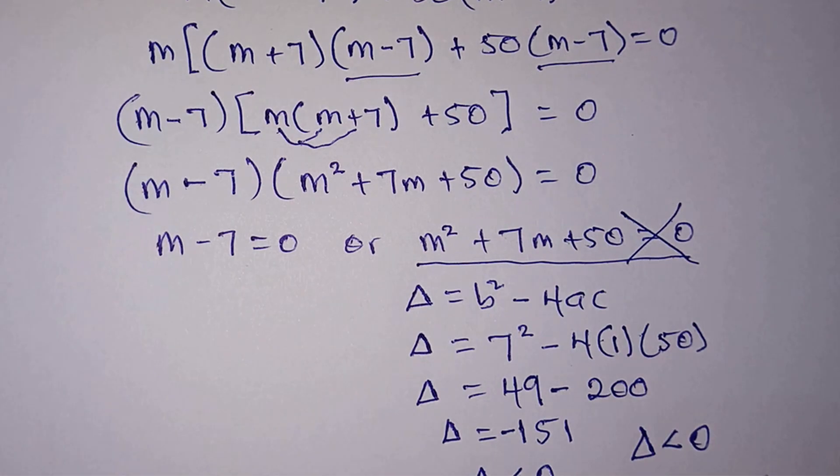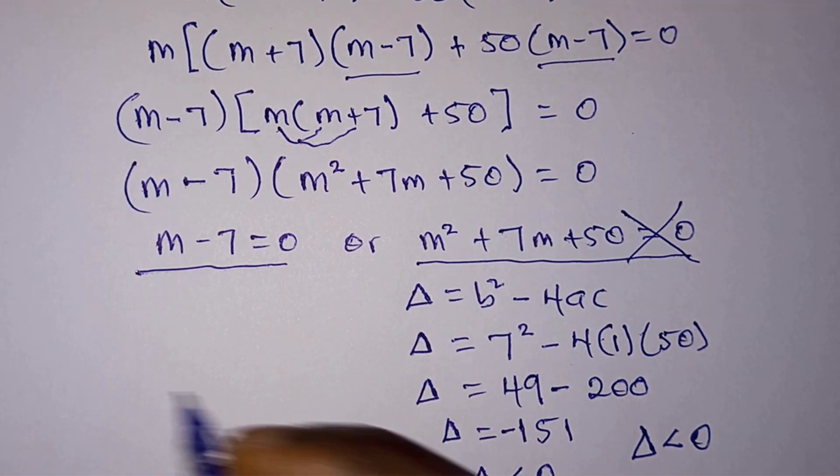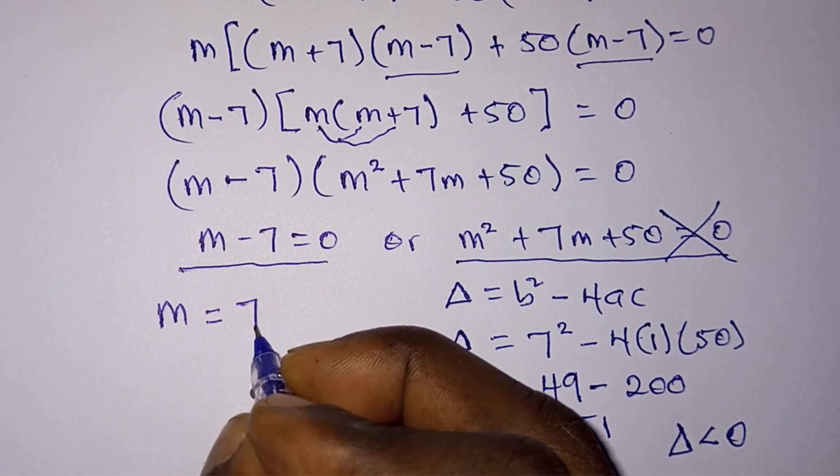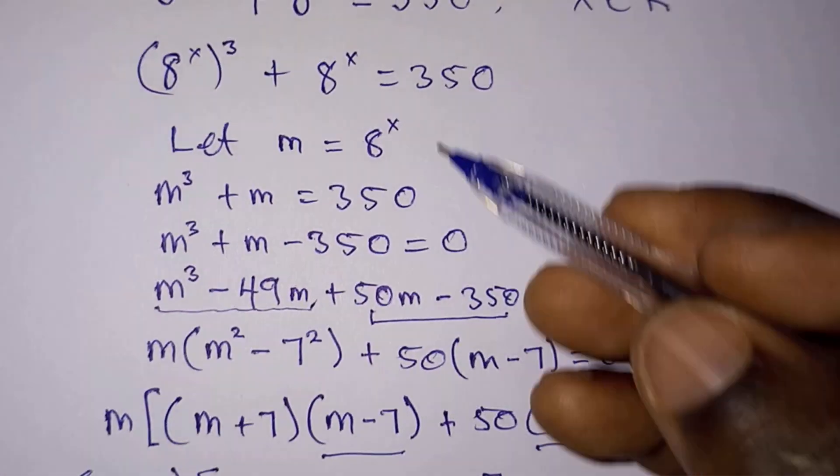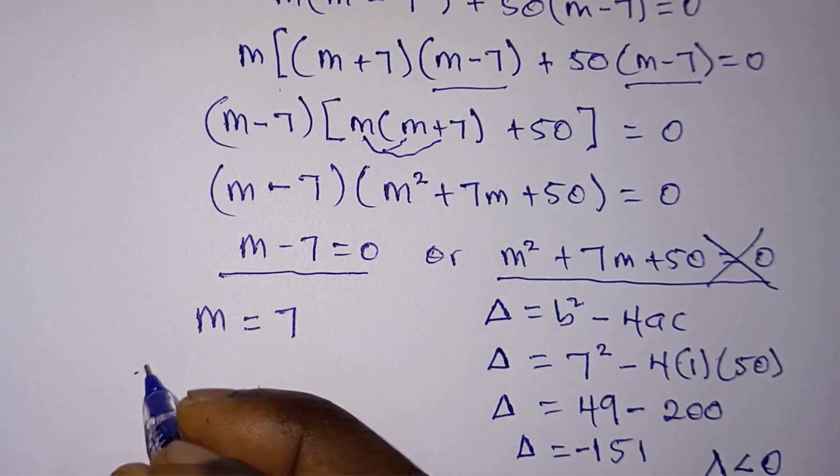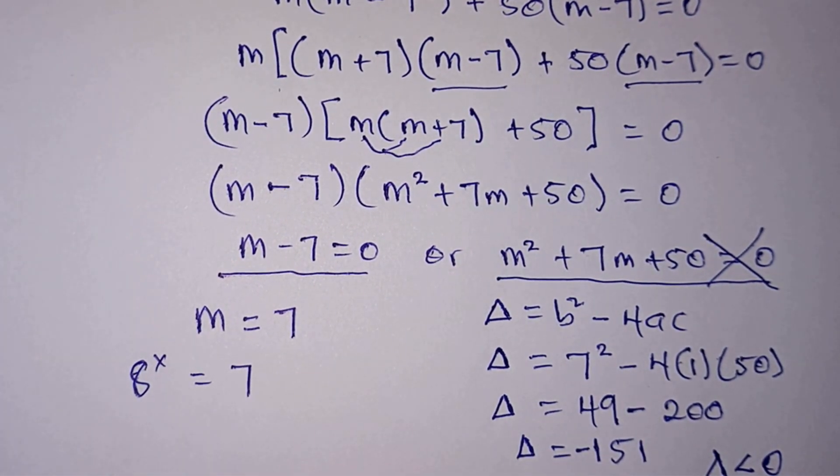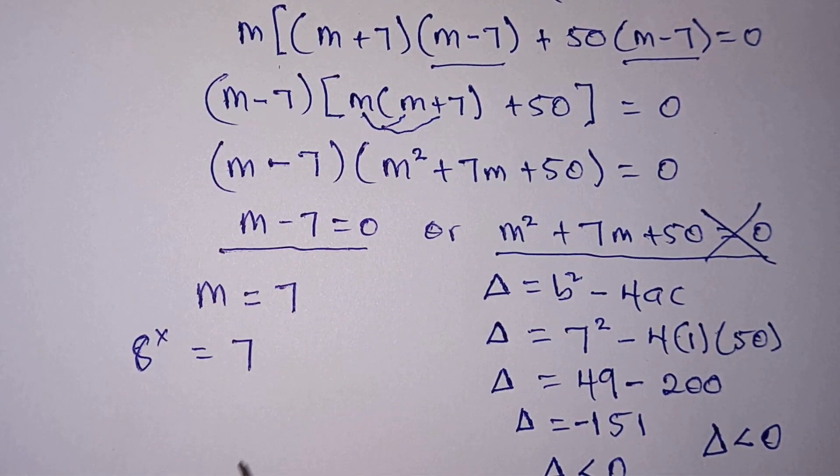Now let's pay attention to this equation. From here straight away we see that m is equal to 7. But remember that we let m equal to 8 to the power x. Therefore, 8 to the power x is equal to 7.